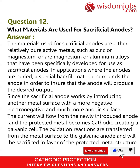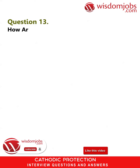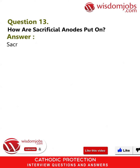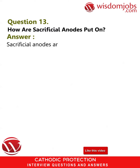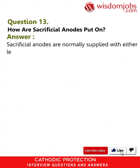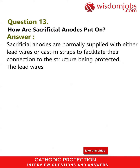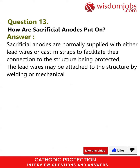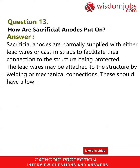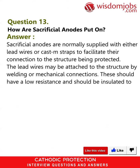Question 13: How are sacrificial anodes put on? Answer: Sacrificial anodes are normally supplied with either lead wires or cast metal straps to facilitate their connection to the structure being protected. The lead wires may be attached to the structure by welding or mechanical connections.